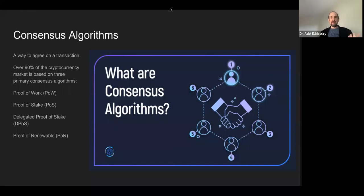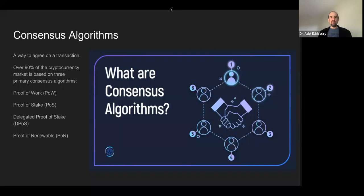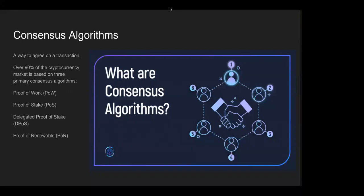Proof of stake is where each node stakes some of their tokens and says 'I'm telling the truth — here are my tokens, and if I lie, you can slash them and take them away.' That of course dramatically reduces energy consumption. Most newer blockchains are moving into this model, like Casper, and Ethereum itself is due for an upgrade.